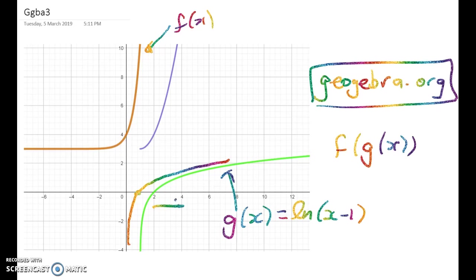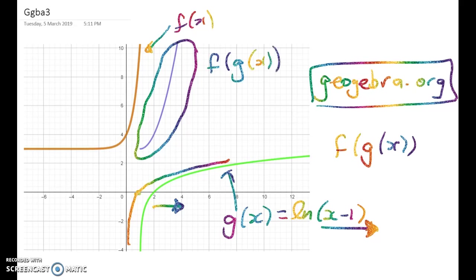So this has been shifted one unit in that direction. Now this thing here is f of g of x, and you can see that Geogebra has automatically figured out that it's got a restriction on the domain and on the range.